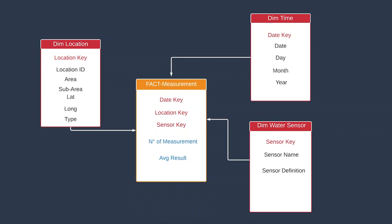Finally, we have the dimension time. Here we have the date key which is the surrogate key, we have the date and we have the day, month, and year.